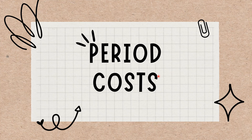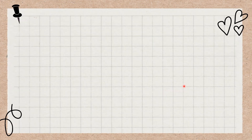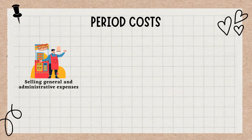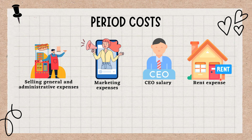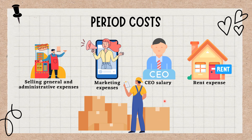In managerial and cost accounting, period costs refer to costs that are not tied to or related to the production of inventory. Examples include selling, general and administrative expenses, marketing expenses, CEO salary, and rent expense relating to a corporate office. These costs are not related to the production of inventory and are therefore expensed in the period incurred.